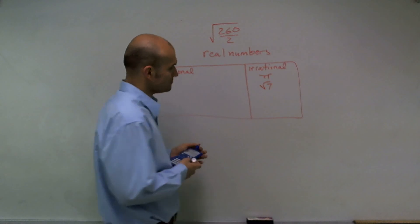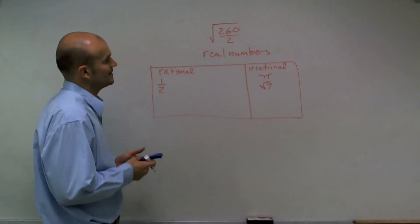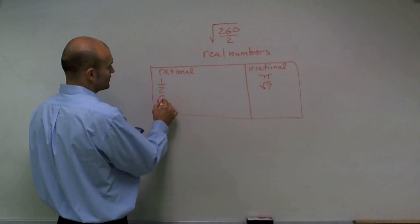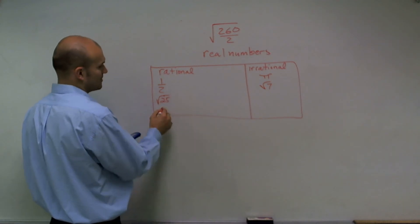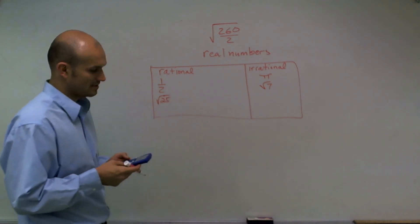On the other hand, if I look at this, radical 25, that's a rational number because that equals 5, a whole number.